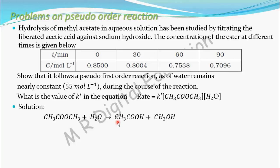The concentration of the ester — which is methyl acetate — is given at different times. The table has a time column in minutes and a concentration column in mole per liter. At time t = 0, concentration of the ester is 0.8500. At t = 30 minutes, concentration is 0.8004. Similarly, values are given at t = 60 and t = 90 minutes.